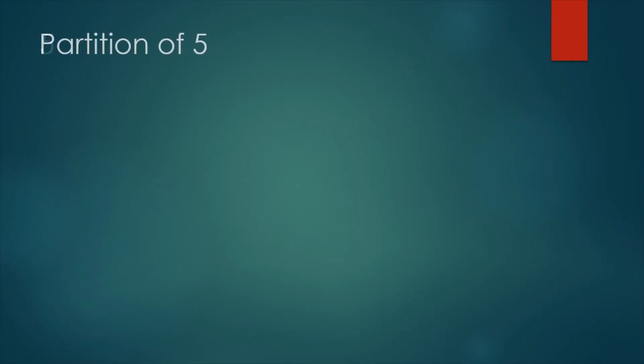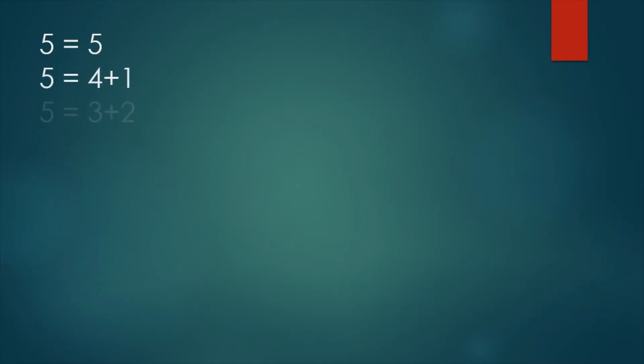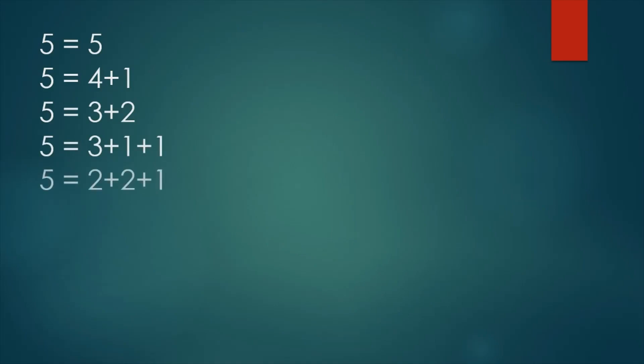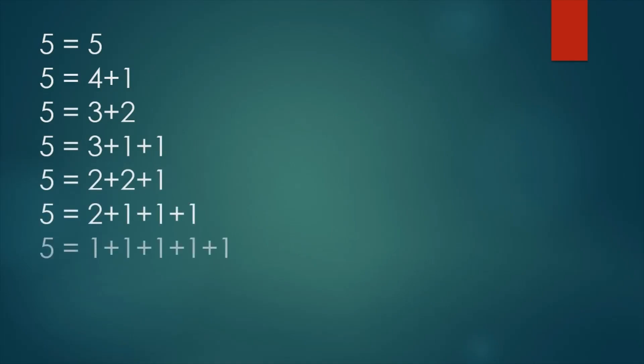To go over what we just did in Lego form, we will now demonstrate the partitions of 5. As you can see, 5 is a valid representation for a partition of 5, along with 4 plus 1, 3 plus 2, 3 plus 1 plus 1, 2 plus 2 plus 1, 2 plus 1 plus 1 plus 1, and then five 1s, giving 5 a total number of 7 partitions.